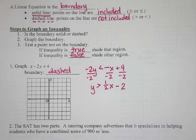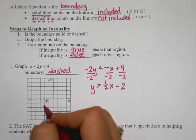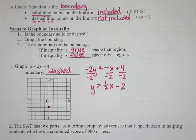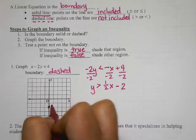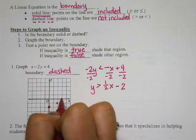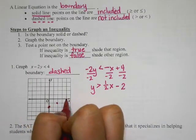So now let's graph that line. I'm going to start at negative 2, and my slope is one-half — rise over run, up 1, right 2. Remember, I'm doing a dashed line.